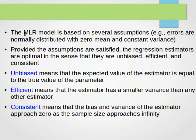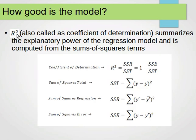The multiple linear regression model is based on several assumptions — for example, errors are normally distributed with zero mean and constant variance. Provided the assumptions are satisfied, the regression estimators are optimal: unbiased (the expected value of the estimator equals the true parameter value), efficient (the estimator has smaller variance than any other estimator), and consistent (bias and variance approach zero as sample size approaches infinity).